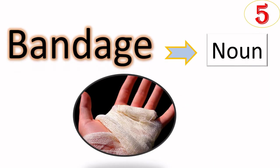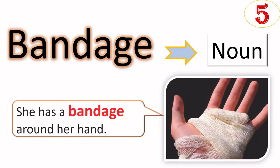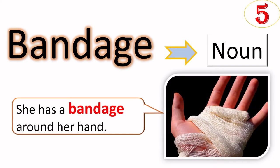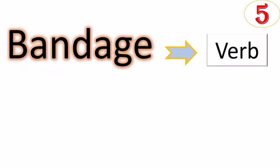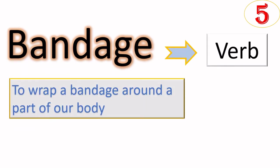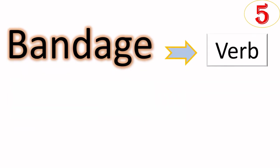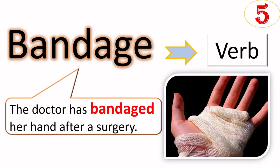Bandage as noun, its meaning is pretty simple. If we give the example, she has a bandage around her hand. When we use the same word as verb, it means to wrap a bandage around a part of our body. An example can be the doctor has bandaged her hand after a surgery.